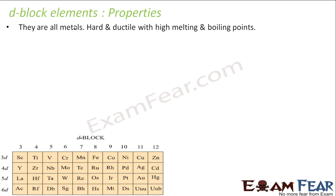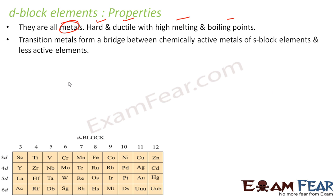Let us see the properties of d-block elements. They are all metals, hard and ductile with high melting and boiling points. They are called transition elements. Why? Because they form a bridge between chemically active s-block elements and less active p-block elements.